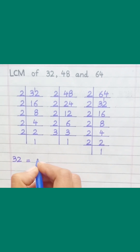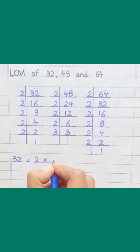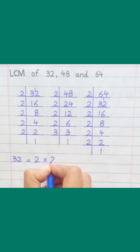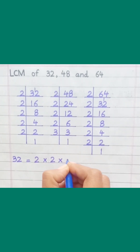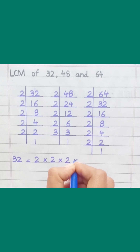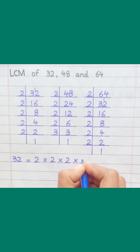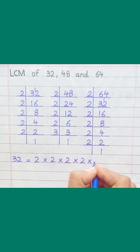32 equals 2 multiply 2 multiply 2 multiply 2 multiply 2.